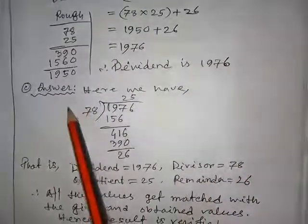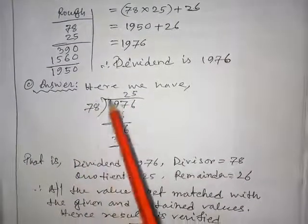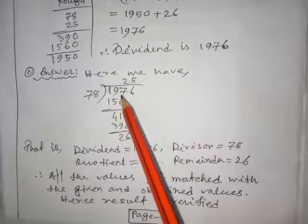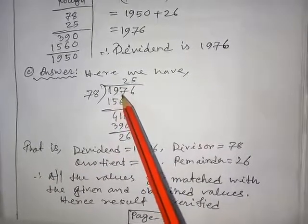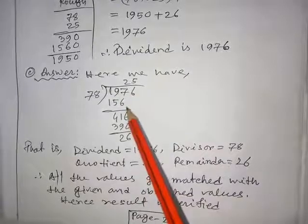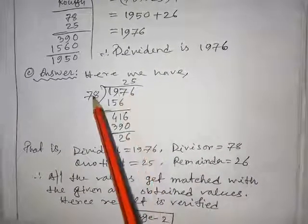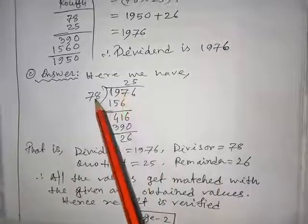Now, let us start problem C. Here, they are asking to verify all the values, the values obtained and given. If we divide, and it matches with all of these values, then this will be verified. This is the dividend, this is the divisor. Divide the dividend by the divisor.